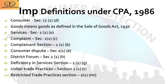The definition of 'complaint' under Section 2(1)(c) of CPA is defined as allegations in writing made by a complainant that any unfair trade practice, defect, or deficiency exists in a product against the service provider or goods supplier. 'Complainant' means a consumer, any voluntary consumer association registered under the Companies Act, or any central or state government. 'Consumer dispute' under Section 2(1)(e) is a dispute where the person against whom a complaint has been made denies or disputes the allegations contained in the complaint.